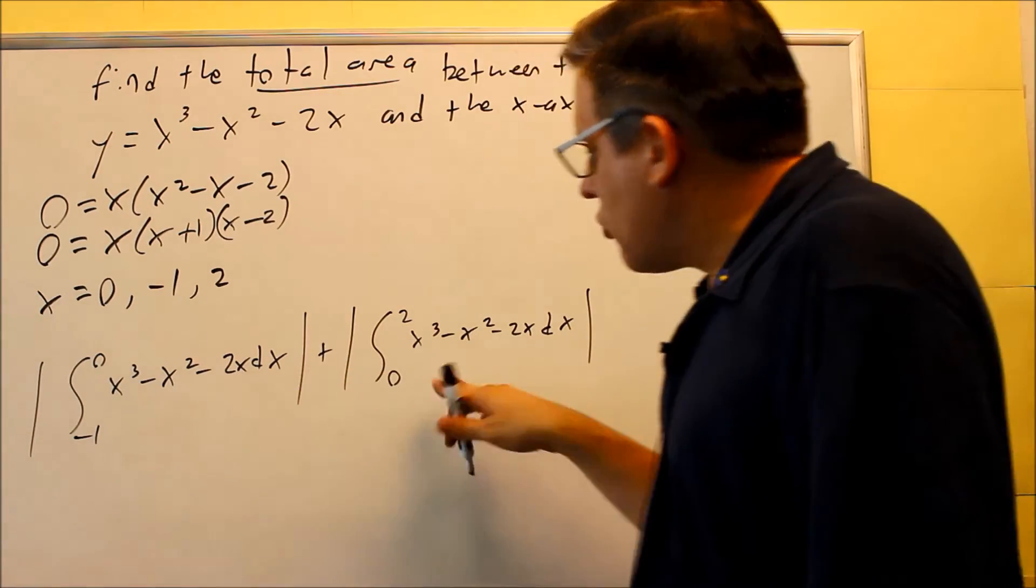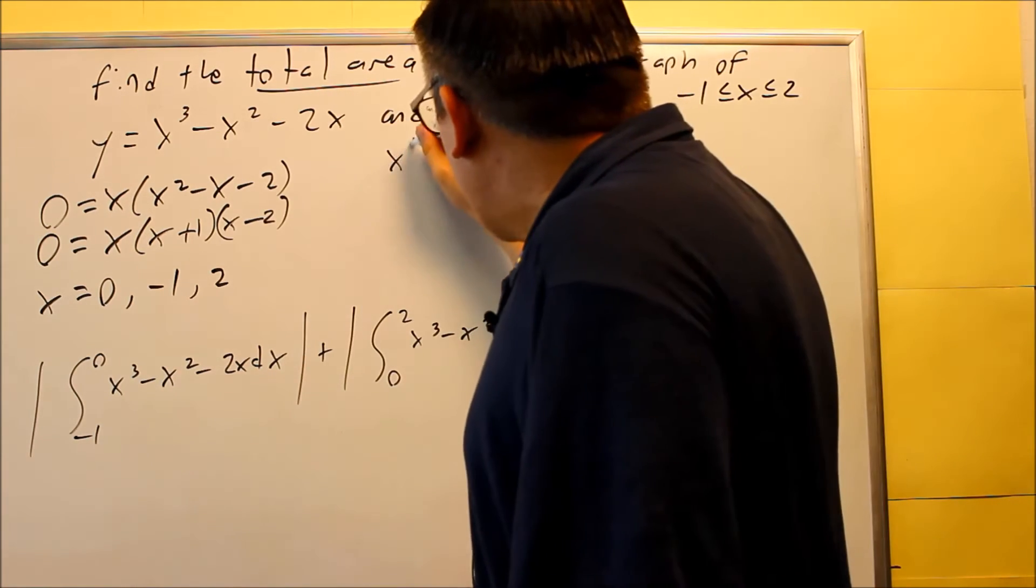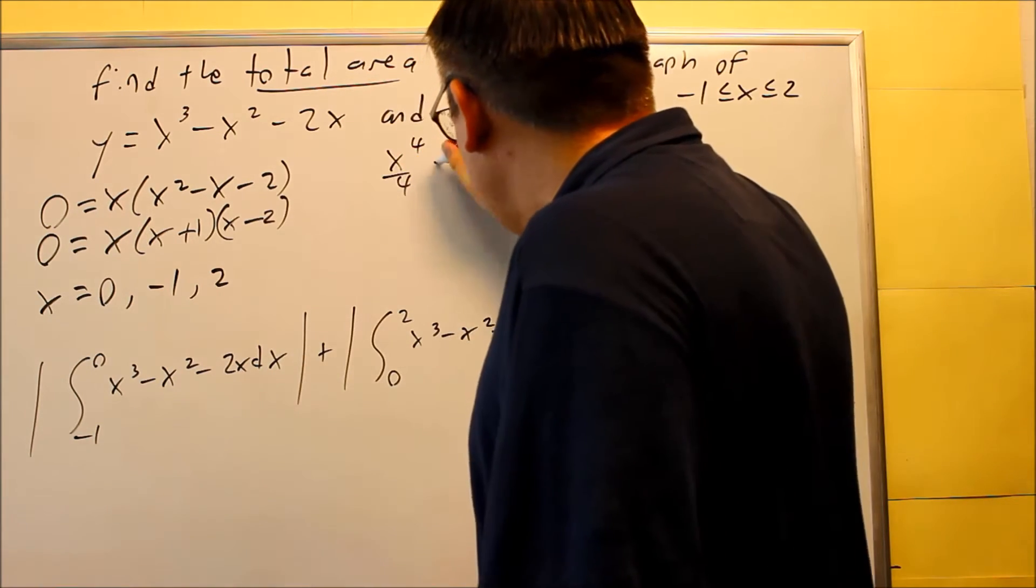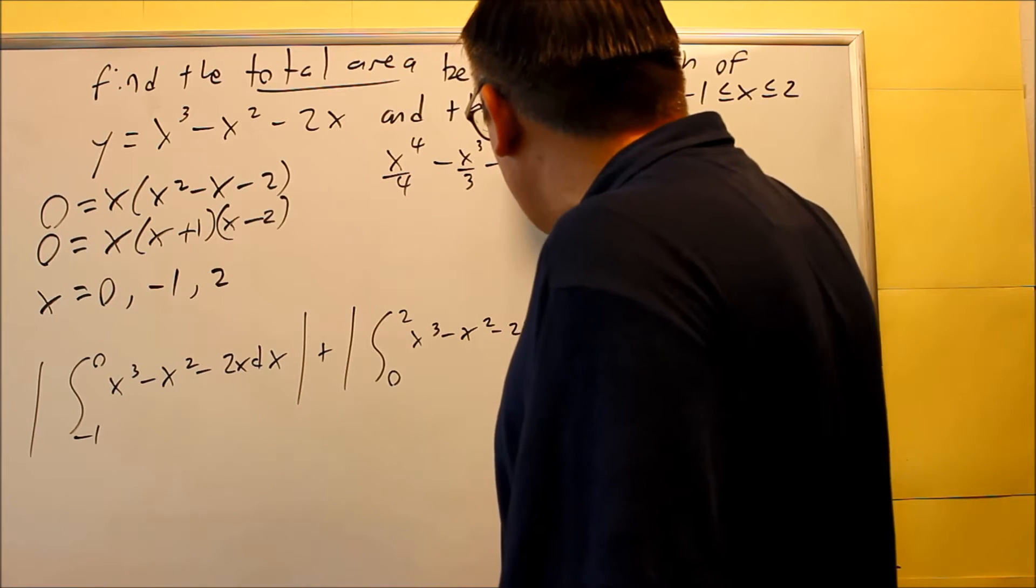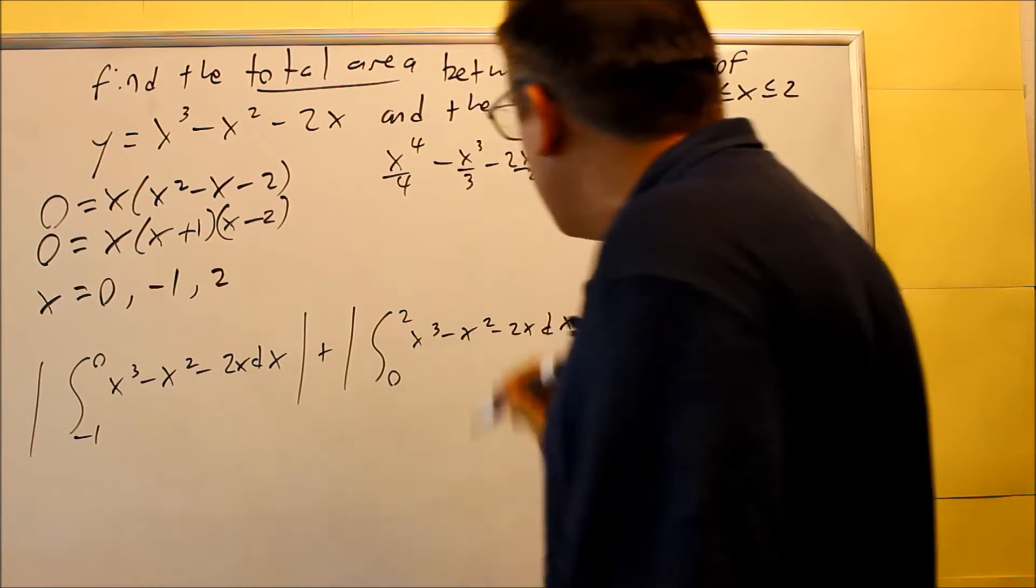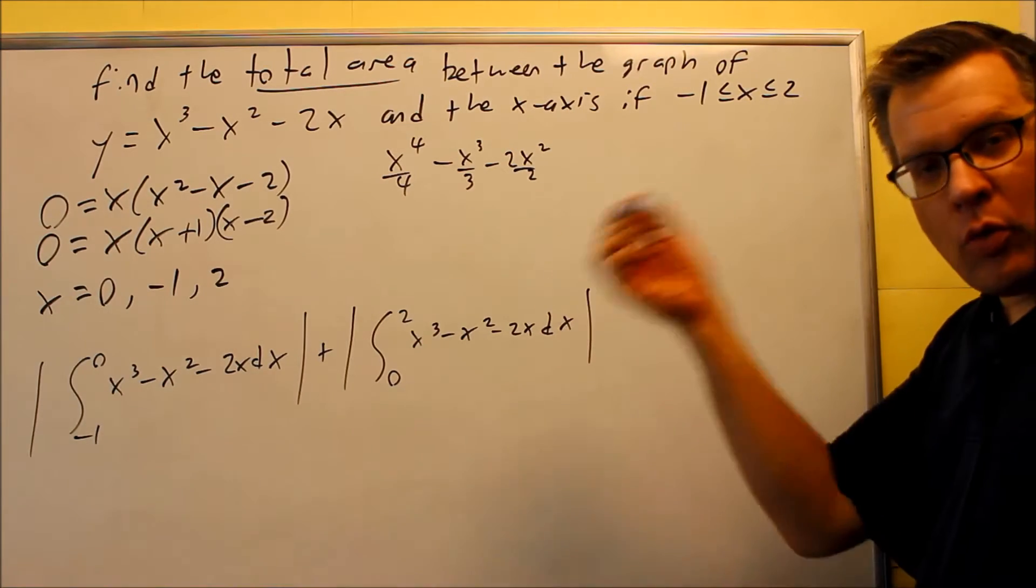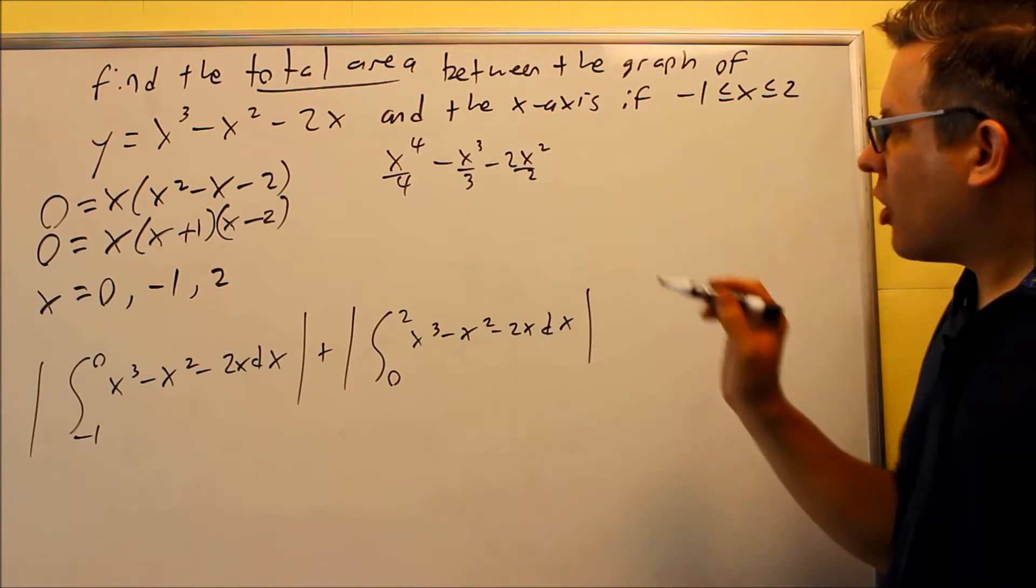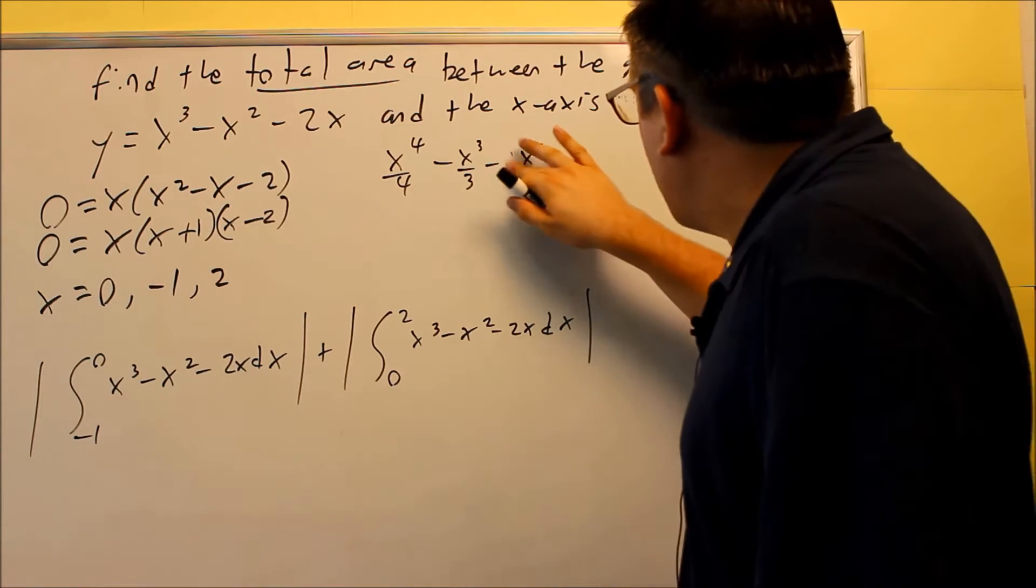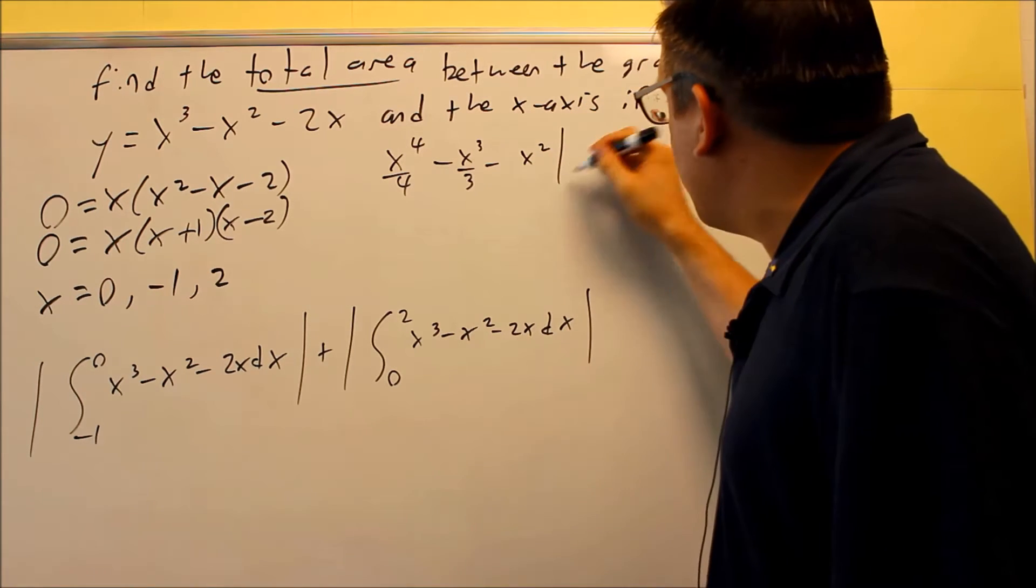So let's do each one of these individually. First we're going to take the anti-derivative of this one: x to the fourth over four minus x cubed over three, two x squared over two. That's going to be your anti-derivative. Raise the power by one, divide by the new power. And because I got two over two, I'm going to simplify that. Those cancel out. And so this will be your anti-derivative.